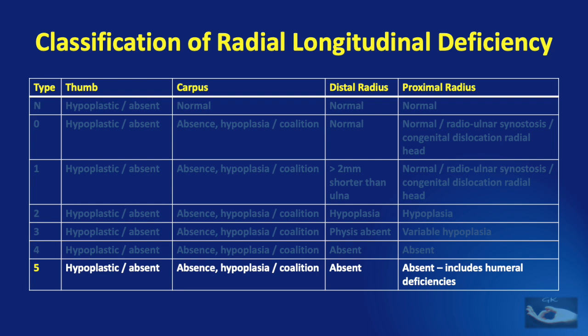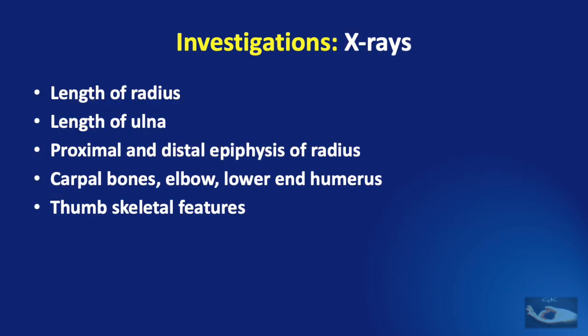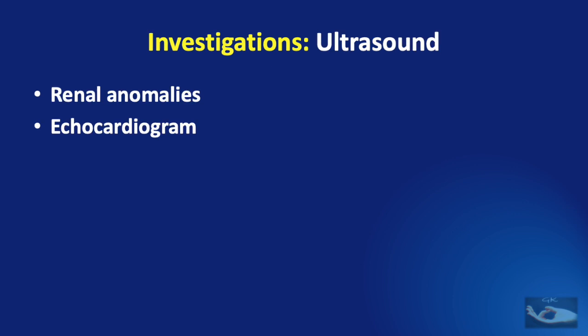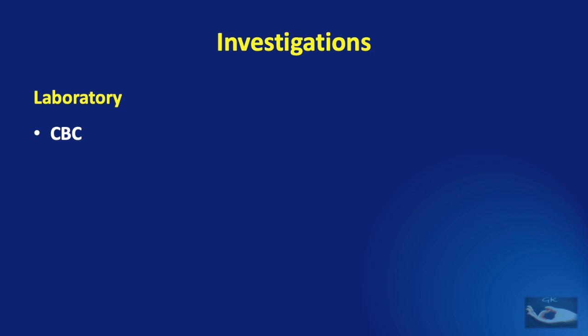The X-ray is the most important investigation. We need to measure the length of the radius and ulna, assess the presence of proximal and distal radial epiphyses, involvement of carpal bones, elbow, humerus, and skeletal features of the thumb. Ultrasound to rule out renal anomalies and an echocardiogram are mandatory in all patients with radial club hand. A complete blood count is a basic investigation, but we must remember its limitations in diagnosing Fanconi anemia as already discussed.